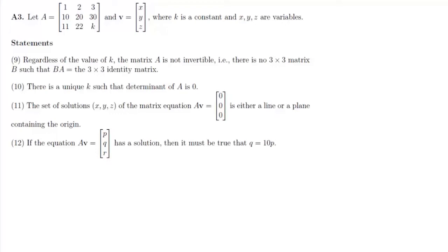This third question gives us two matrices A and B, where k is any constant and x, y, and z are variables. We need to find which of the following statements are correct.